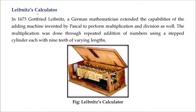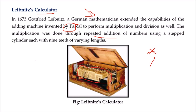Leibniz: the Leibniz calculator was built in 1673. Leibniz was a German mathematician who added certain capabilities to Pascal's design, including multiplication as well as division. Multiplication was carried out through repeated addition of numbers using a stepped cylinder, each with 9 teeth of varying length.